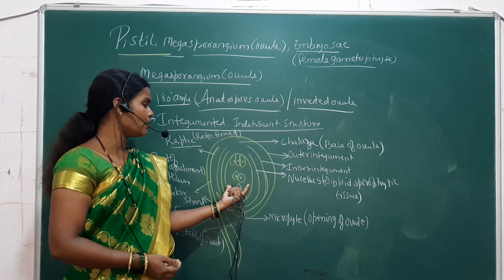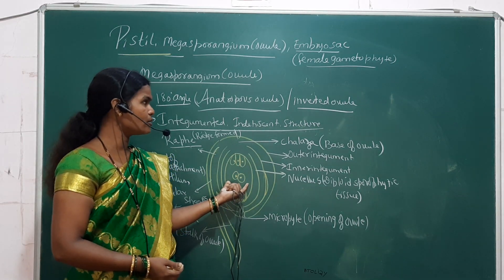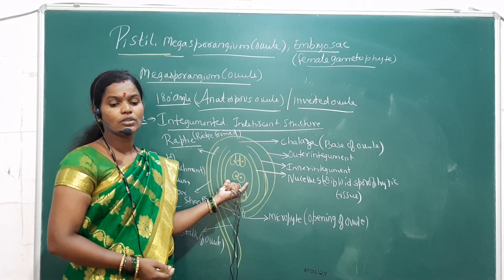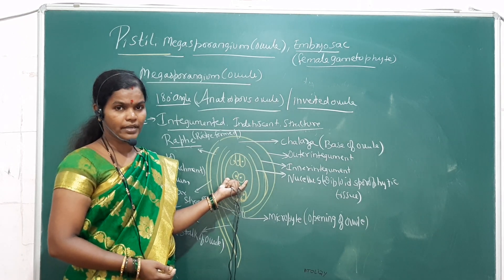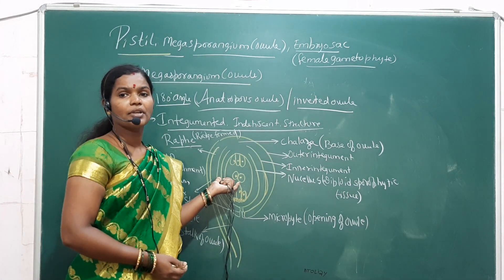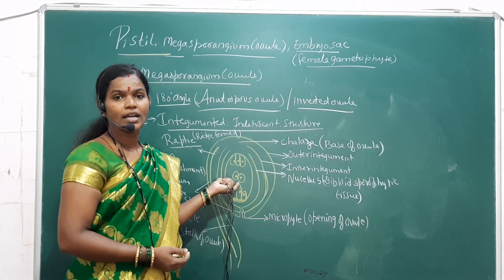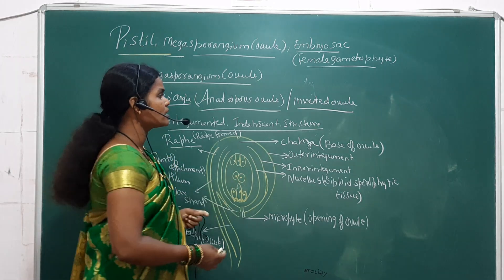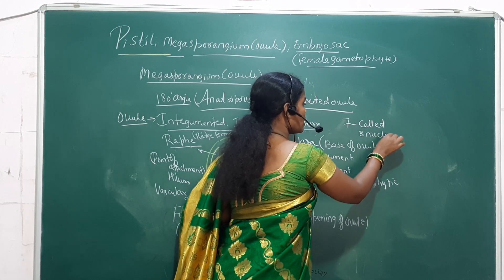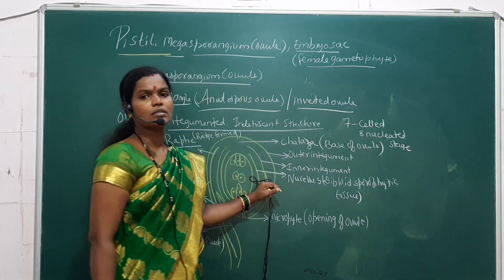Now coming to the main part, that is the embryo sac. The embryo sac is also called as the female gametophyte. This female gametophyte or embryo sac is a bag-like structure consisting of a seven-celled, eight-nucleated stage.